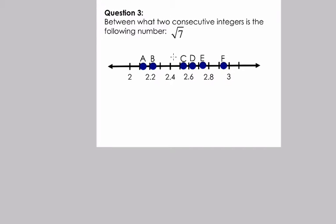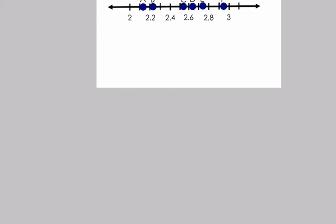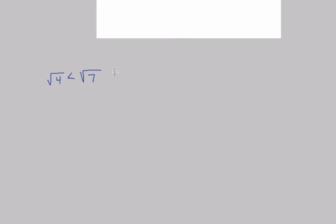In this problem, we're trying to find out between which two consecutive integers the square root of 7 is. Points A, B, C, D, E, and F represent points on a line, and we're trying to pick the point that best represents the square root of 7. The square root of 7 is a number larger than the square root of 4 and less than the square root of 9 — so it's larger than 2 and less than 3. Since 7 is only 2 away from 9 but 3 away from 4, the square root of 7 is closer to the square root of 9. In other words, the square root of 7 is some decimal between 2 and 3 that is closer to 3 than to 2.